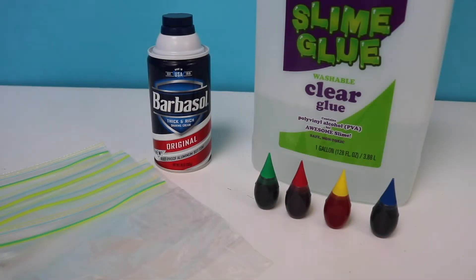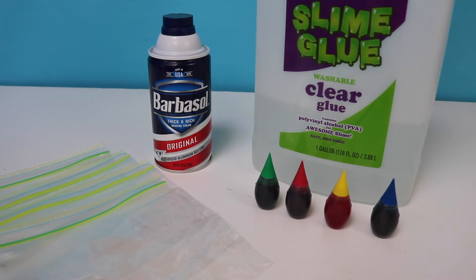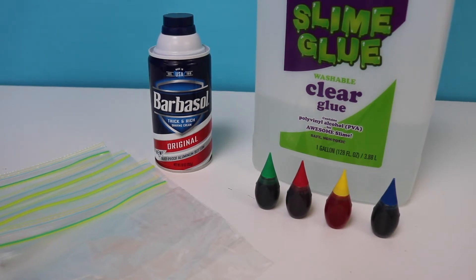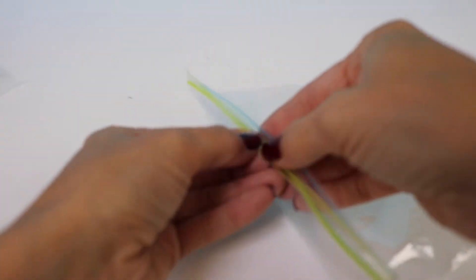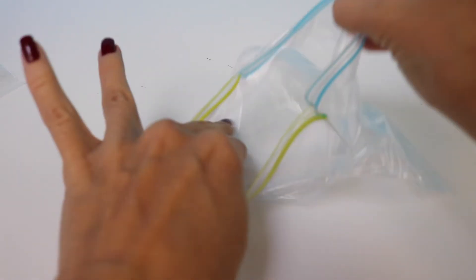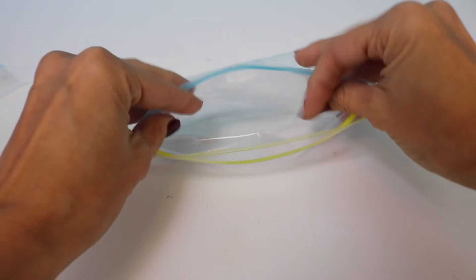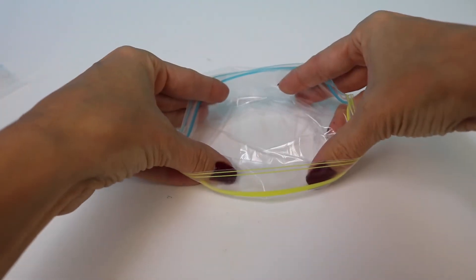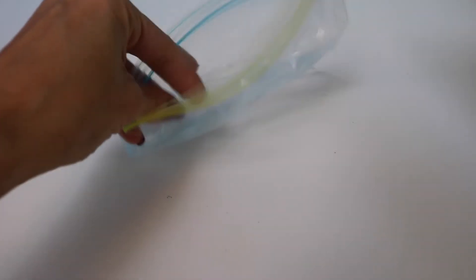So the first things that we need are just some shaving cream, but we need the cream kind. We can't use the gel. We also need some plastic ziplock bags just like this, and then we're going to use slime glue. Clear slime glue is best to use. It's safe and you can use it.